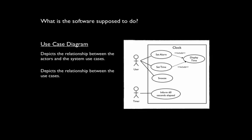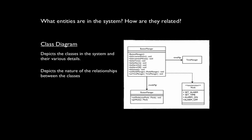In terms of what the software is supposed to do, we have a use case diagram, which captures the relationship of the actors in the system — those little stick figures — and what their goals are. The use cases represent goals, so we see that relationship. We can also see that there are relationships between use cases. In terms of what the entities are in the system and how they relate, we have class diagrams. Those rectangles represent classes, and the arrows going between them represent different types of relationships. We can communicate a lot of information using these class diagrams.